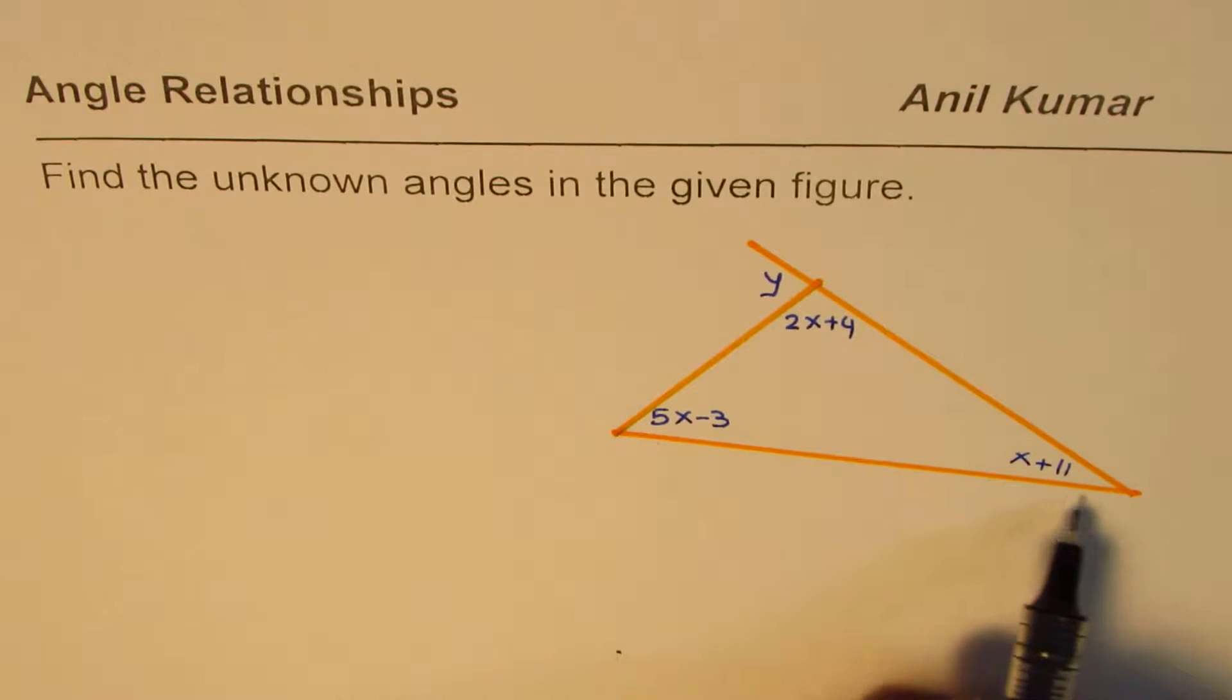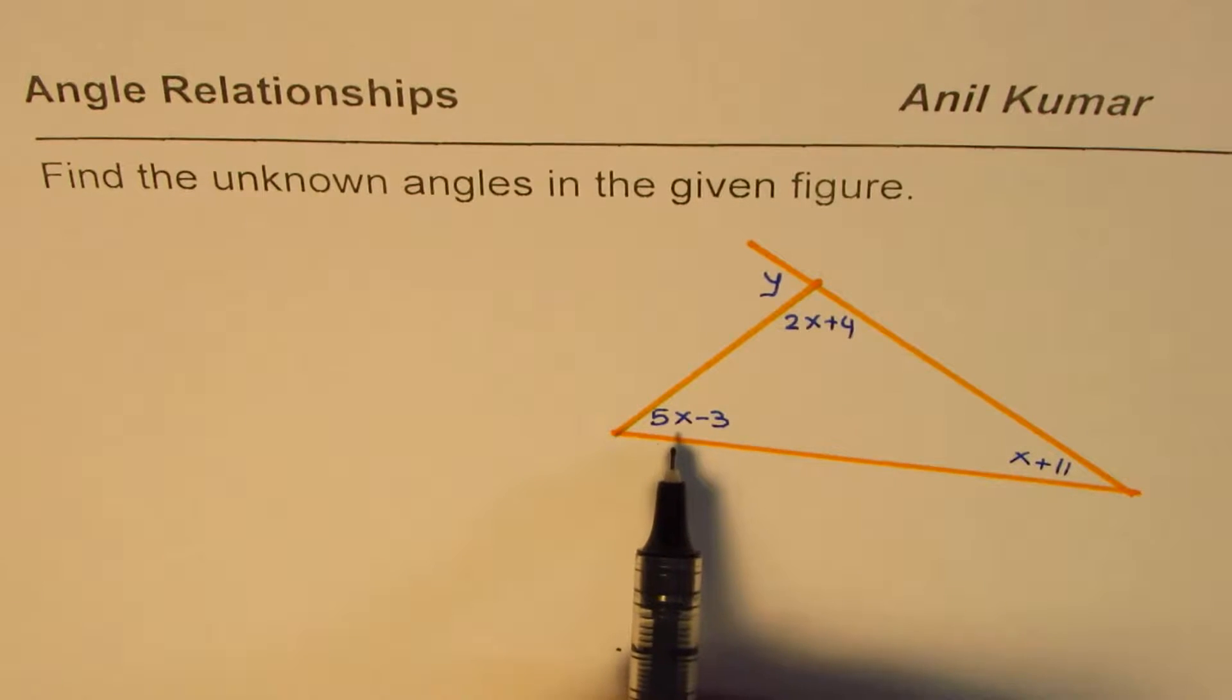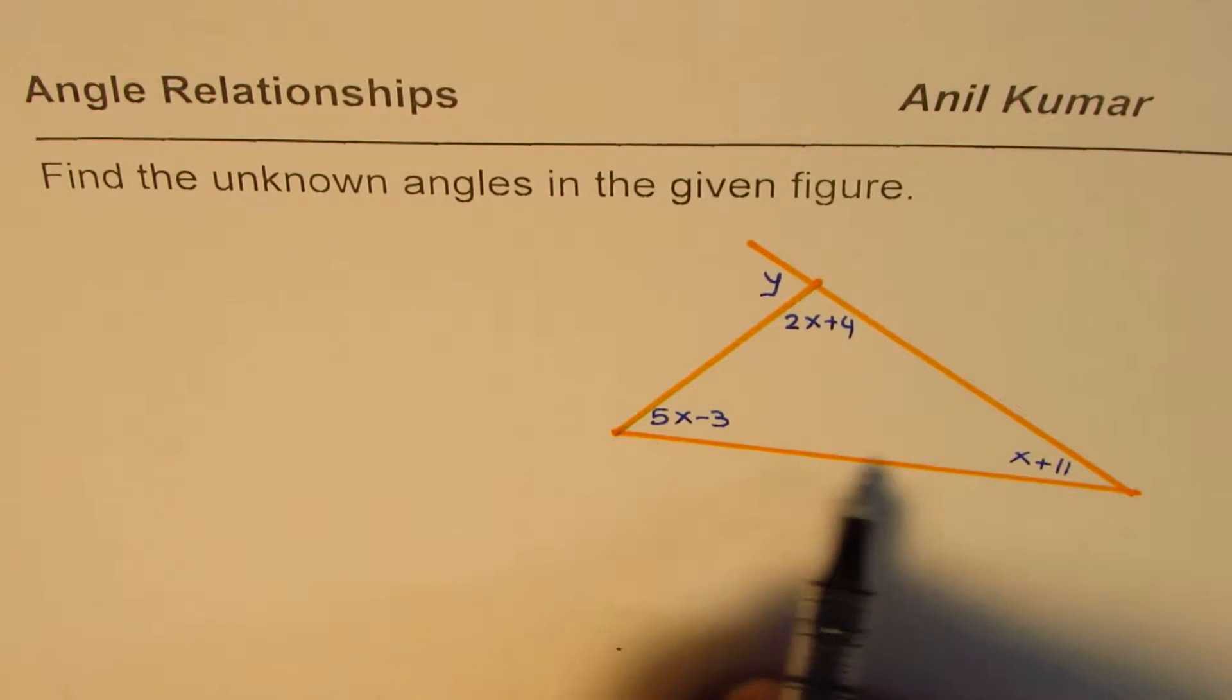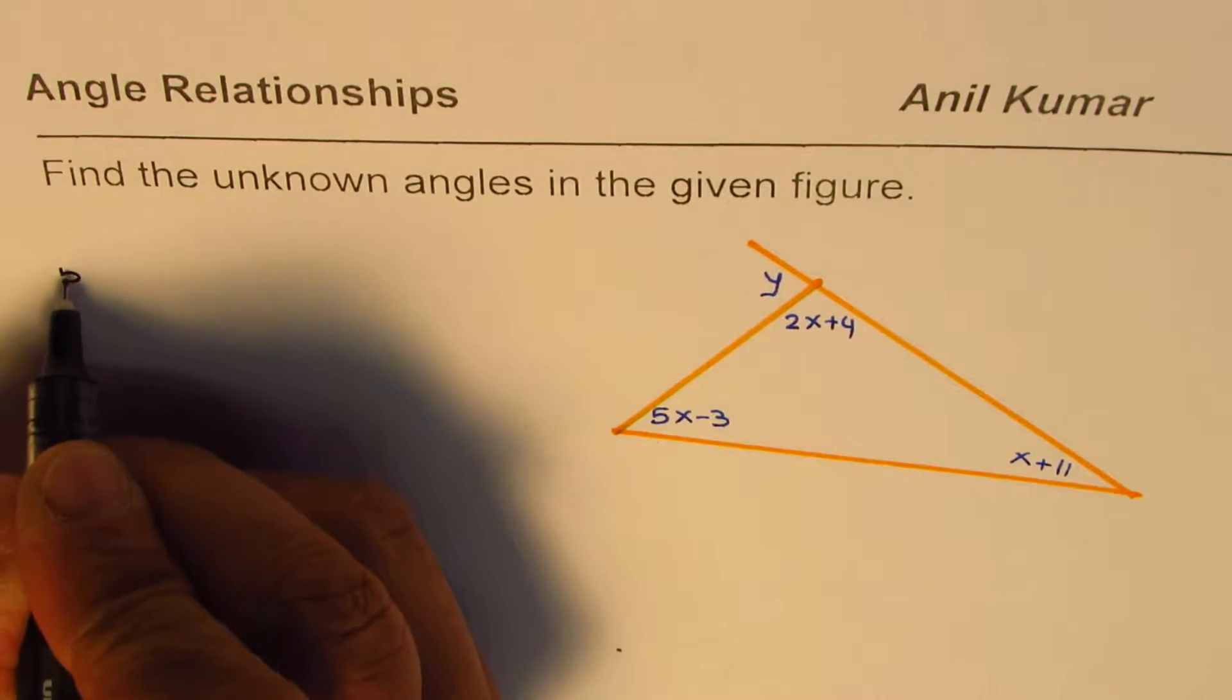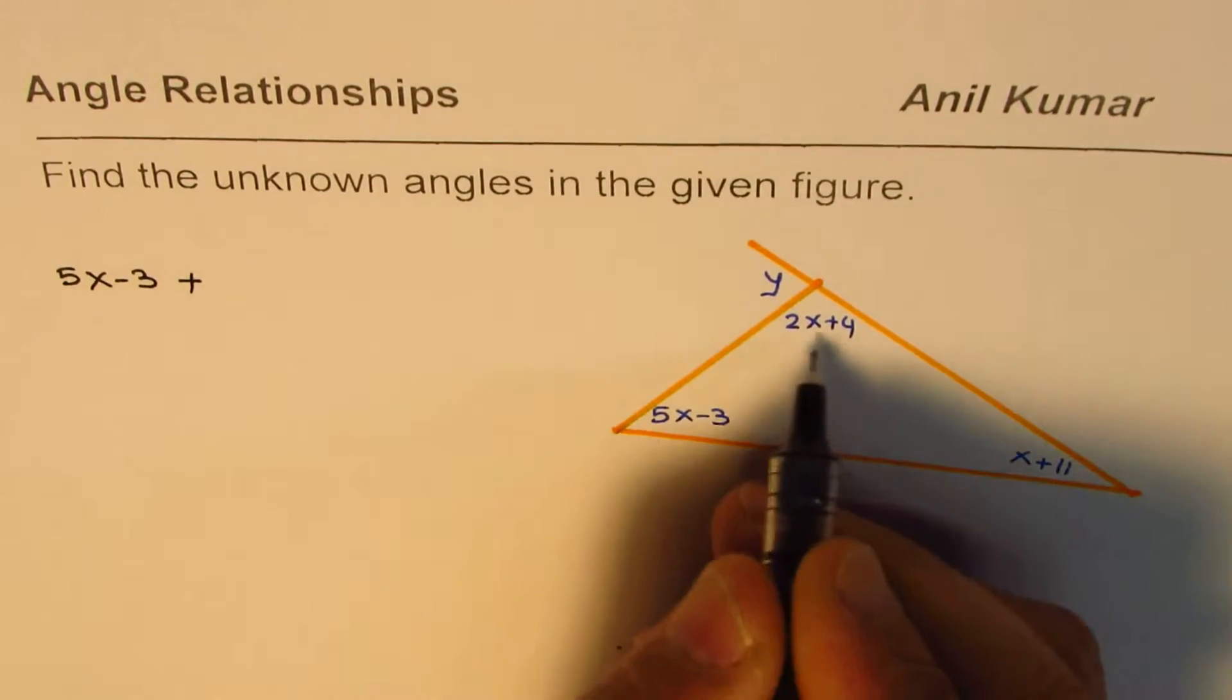Now we are given a triangle and an external angle y. Now sum of angles in the triangle is 180 degrees. So we can begin by writing an equation, which is 5x minus 3